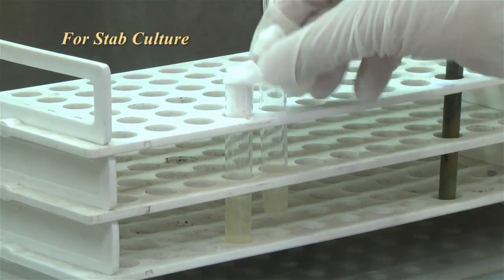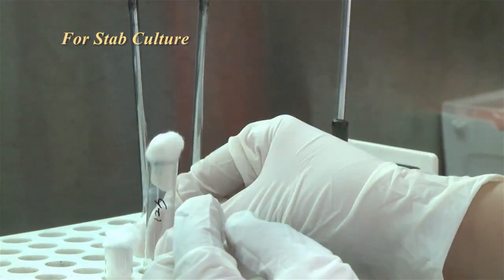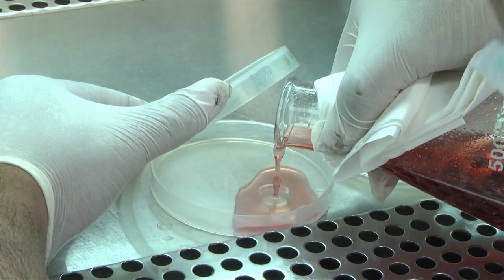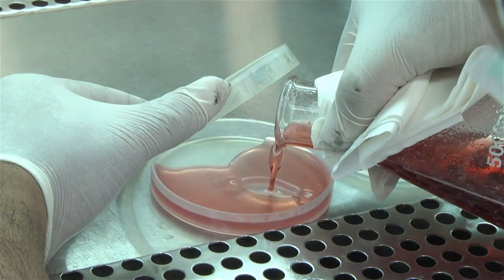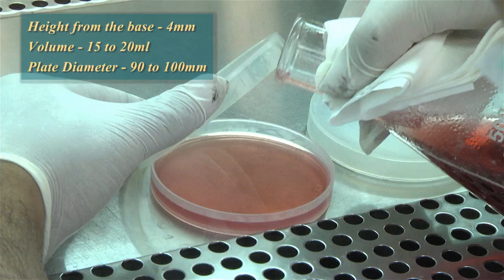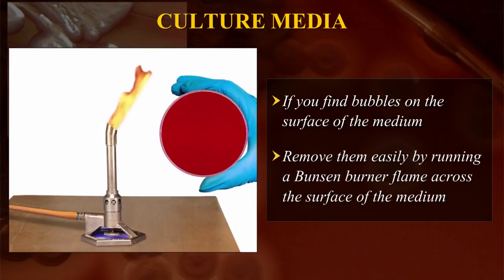If the medium is used for a stab culture, the test tube should be half filled with the medium and allowed to set in an upright position. For distribution into plates, the melted sterile medium is poured on a flat surface such that the medium is about 4 mm in height from the base of the plate — approximately 15–20 ml for a plate of diameter 90–100 mm. The plates are left undisturbed till the medium is set. If bubbles appear on the surface, remove them by running a Bunsen burner flame across the surface.